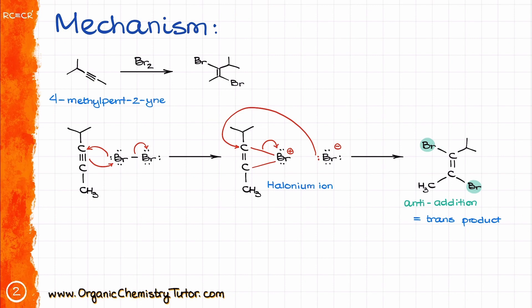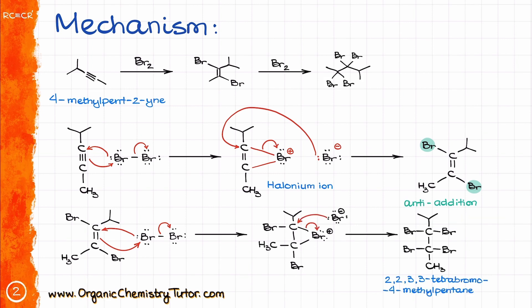We can do this reaction one more time with the alkene that we have just formed. In this case, we are going to react this dibromoalkene with another equivalent of our bromine, which is typically taken in excess. That gives us another halonium ion, which opens up due to the bromide attack, giving us the final product here, the tetrahalogenated alkane 2,2,3,3-tetrabromo-4-methylpentane in this case.